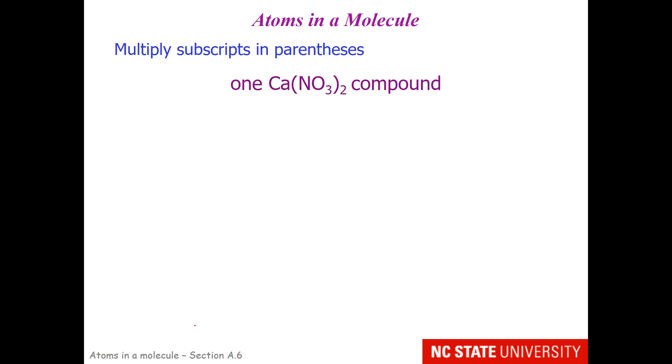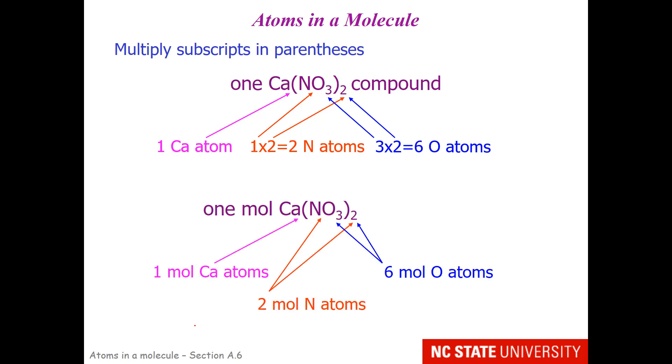What about parentheses? These can be challenging to students. In this compound right here, we have one calcium atom. For the nitrogen, there's no subscript, so that implies one of them. And then you multiply by the number outside the parentheses, so there are two nitrogen atoms. For oxygen, we have 3 times 2, so there are 6 oxygen atoms. The same ratio, 1 to 2 to 6, is true whether or not we're talking about one calcium nitrate compound or one mole of calcium nitrate compound. The units simply change to moles when we're dealing with a mole of material.